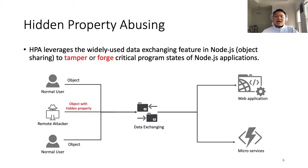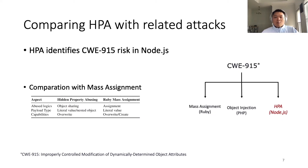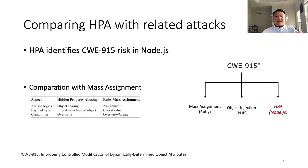In this talk, we mainly focus on server-side scenarios, where a remote attacker wants to attack a Node.js web application or some microservices. HPA identifies CWE 915 risks in Node.js, which is about improper modification of dynamic object attributes. Although such risks have been identified in some dynamic languages such as Ruby and PHP, we are the first to identify them in Node.js.